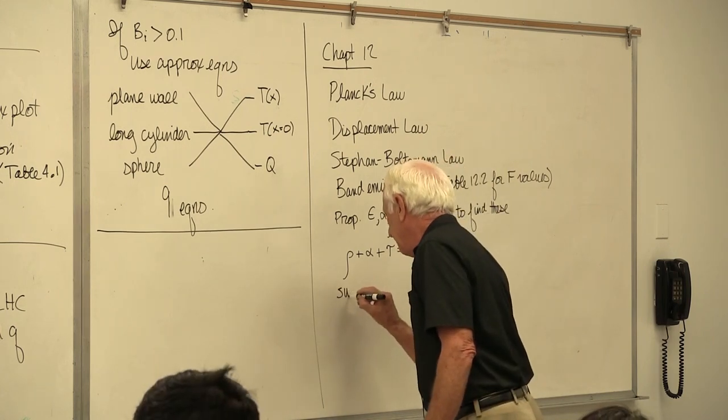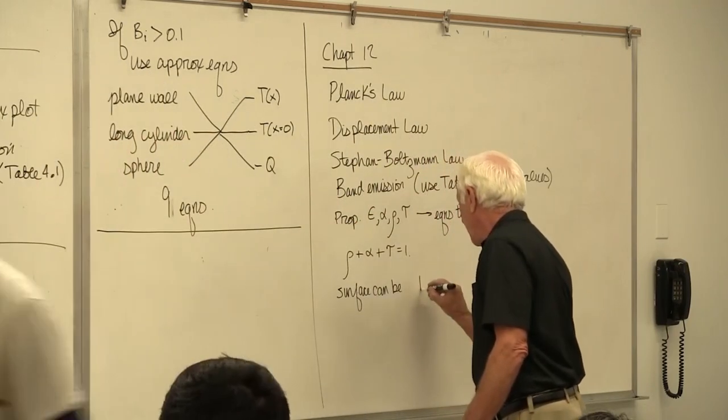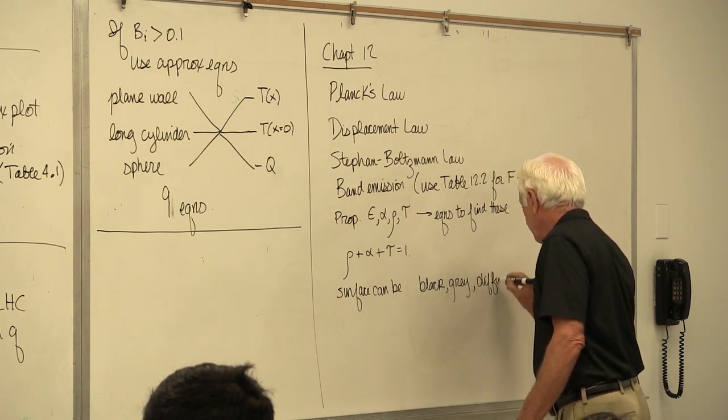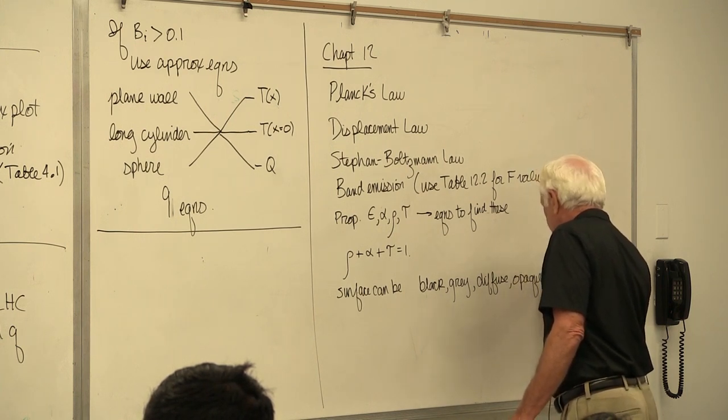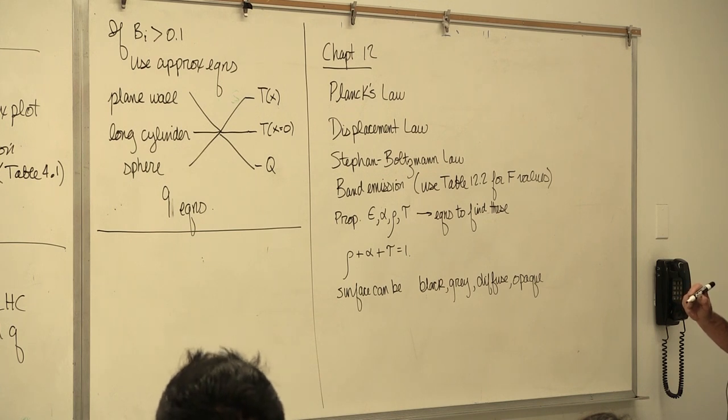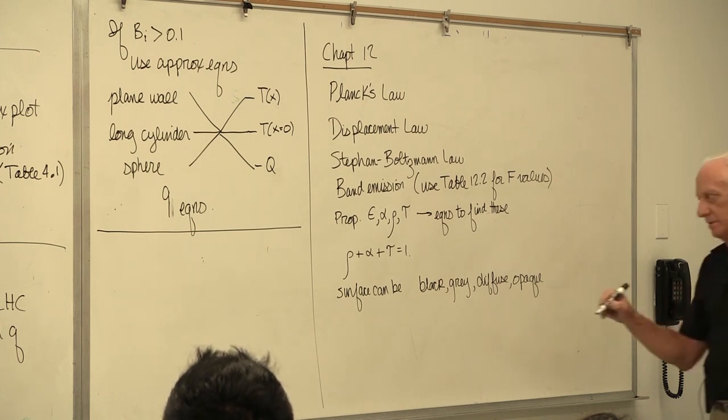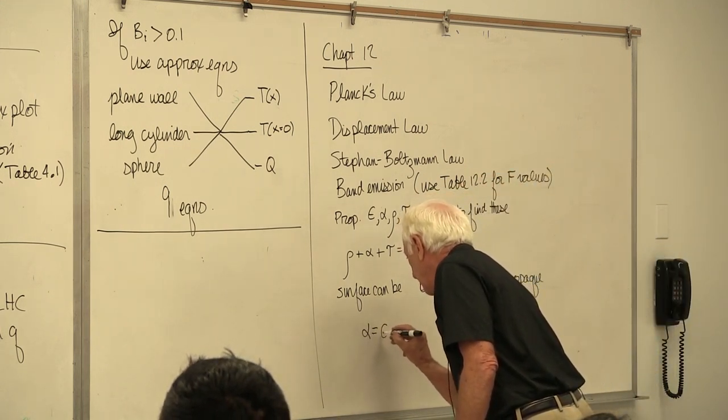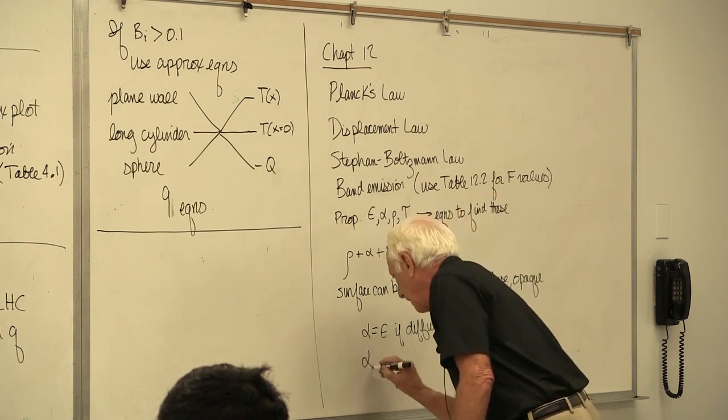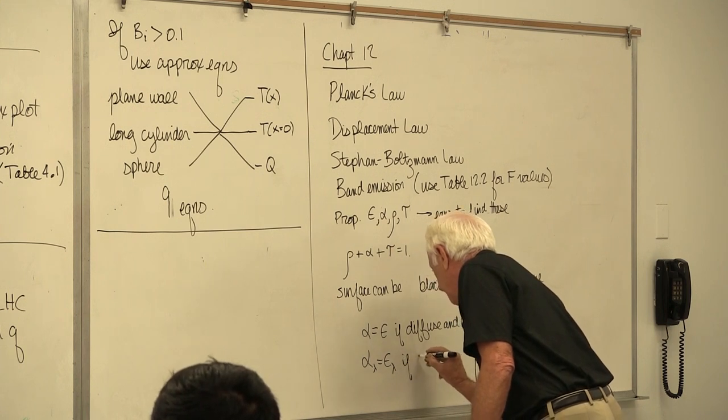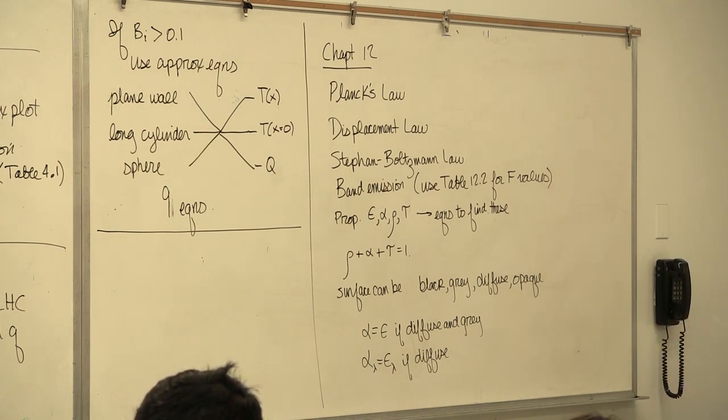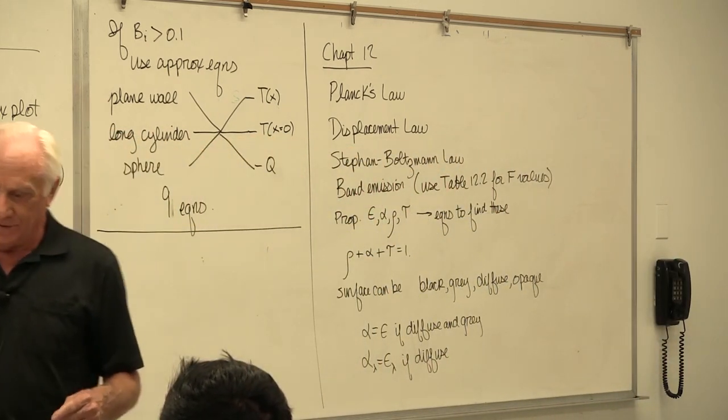The surface can be black, gray, diffuse, opaque. There's a lot of language in Chapter 12—the language of radiation heat transfer. What do these words mean? Opaque: tau equals zero. Black: epsilon equals one. Black: alpha equals one. Diffuse and gray. Alpha equal epsilon if diffuse and gray. Alpha lambda equal epsilon lambda if only diffuse—if only diffuse, doesn't say gray, just says a diffuse surface. Those are called Kirchhoff's laws. Okay, that's 12.